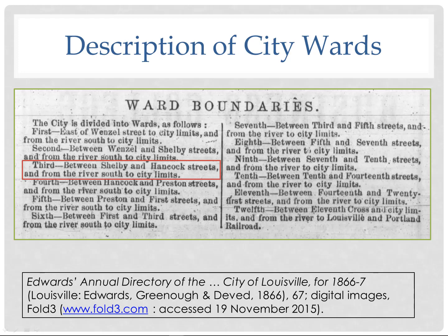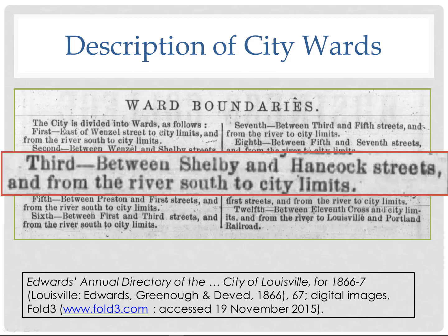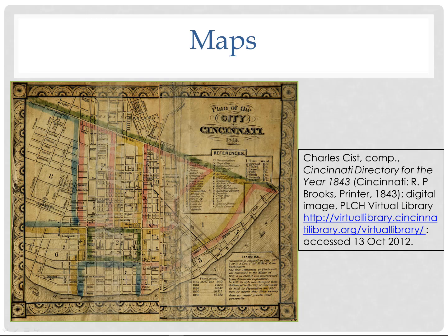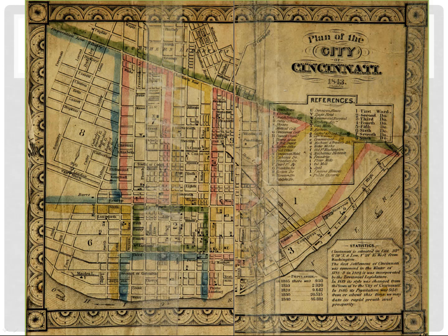Directories often include descriptions of city wards. Louisville, Kentucky in 1866–67 describes each ward: for example, the third ward runs between Shelby and Hancock streets from the river south to the city limits. Detroit went further and conducted a mini census of each ward, giving the number of males and females under and over 21, and enumerating colored inhabitants separately. Cincinnati's 1843 city directory contains a wonderful map of the city indicating each ward.